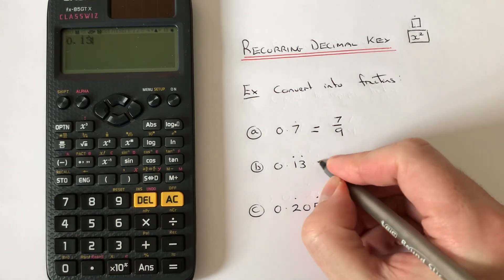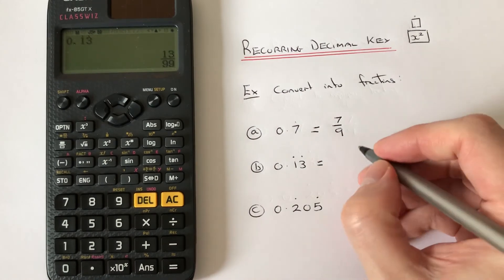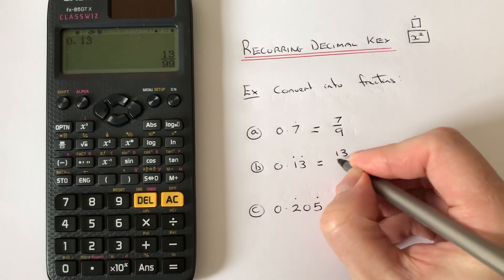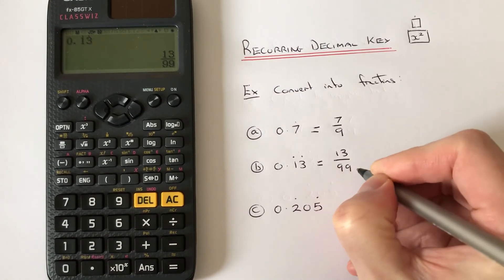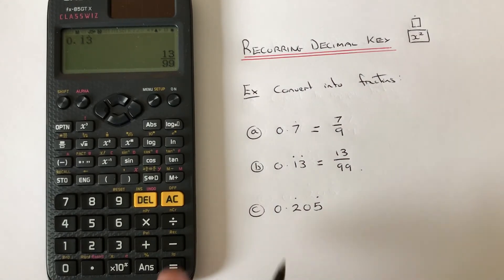This is where it gets a little bit harder to type in. We've got 0.205 with a dot on the 2 and a dot on the 5.